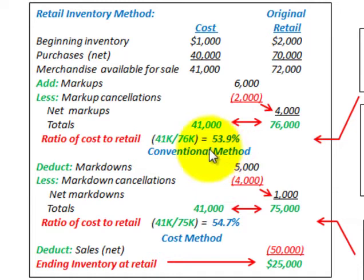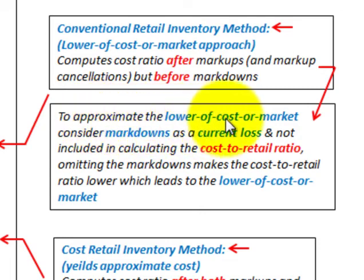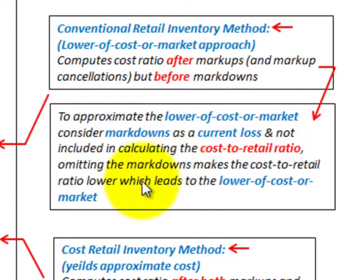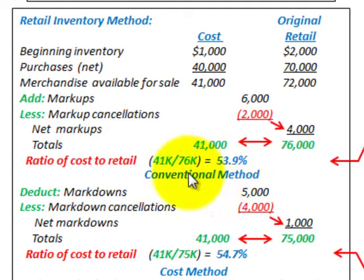Now let's look at the conventional retail inventory method. The conventional retail inventory method is the lower of cost or market approach. You compute the cost ratio after the markups and markup cancellations but before the markdowns, to approximate the lower of cost or market - treating markdowns as current losses not included in calculating the cost-to-retail ratio. Omitting markdowns makes the ratio lower, which leads to the lower cost or market. In this conventional method, we include markups in the ratio but not markdowns.